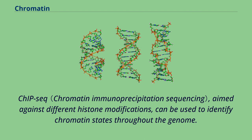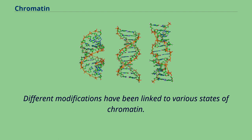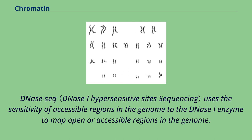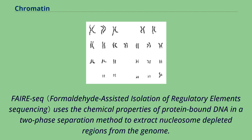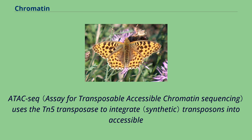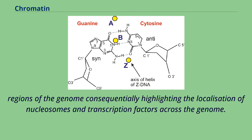ChIP-seq, aimed against different histone modifications, can be used to identify chromatin states throughout the genome. Different modifications have been linked to various states of chromatin. DNase-seq uses the sensitivity of accessible regions in the genome to the DNase enzyme to map open or accessible regions. FAIRE-seq uses the chemical properties of protein-bound DNA in a two-phase separation method to extract nucleosome-depleted regions from the genome. ATAC-seq uses the Tn5 transposase to integrate transposons into accessible regions of the genome, highlighting the localization of nucleosomes and transcription factors across the genome.